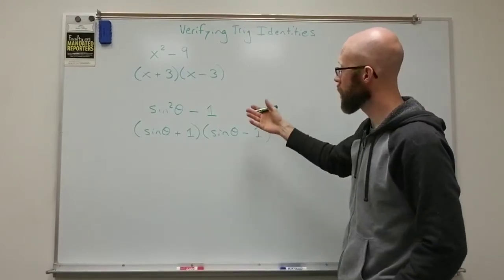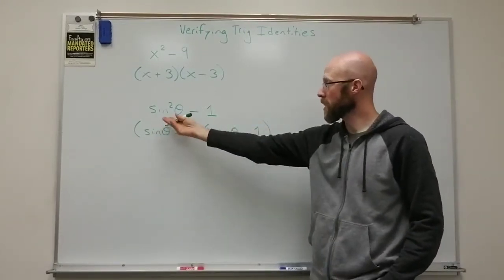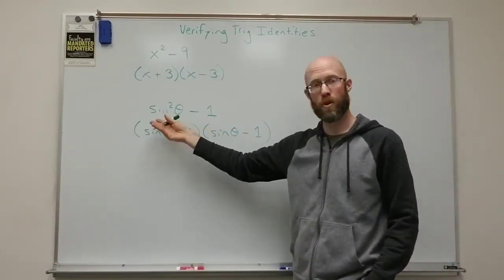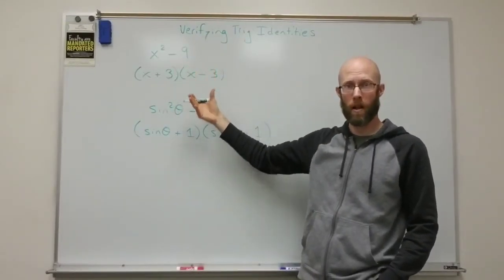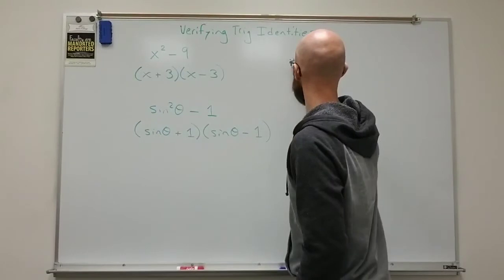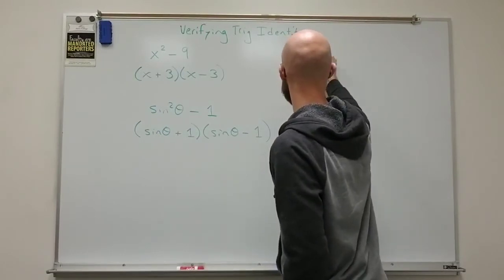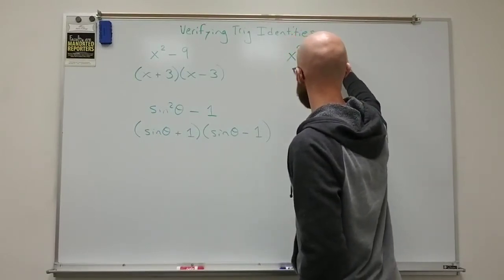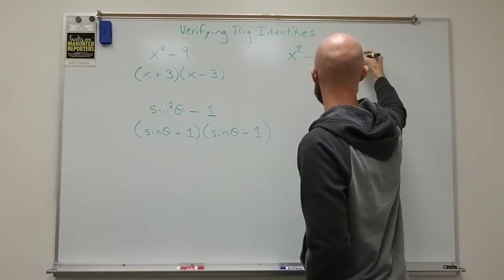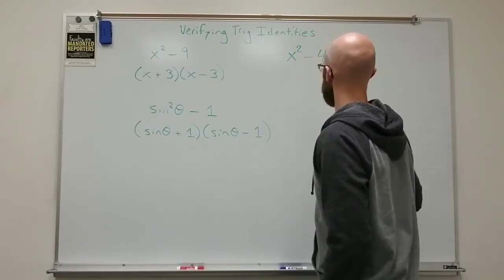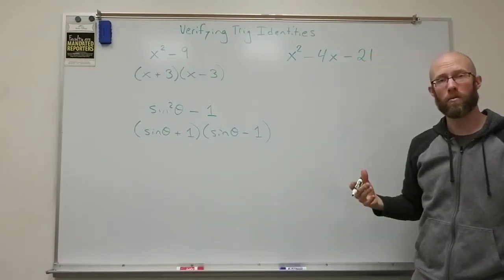So you can always remultiply to make sure that they are equal to the original. In a similar way, you can factor just about any trig expression that mimics a factorable algebraic polynomial. So something like x squared minus four x minus 21, for instance,